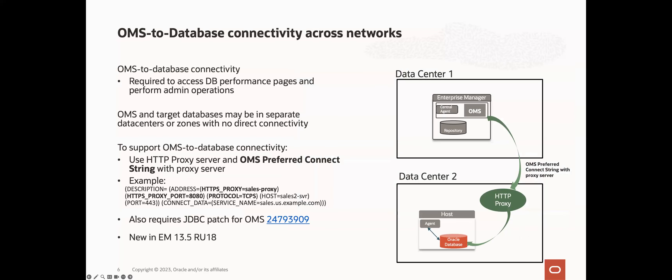OMS to database connectivity is required to access database performance pages and to perform admin operations. In some customer environments, EM and the target databases may be located in different data centers with no direct connectivity between them. So to support OMS to database connectivity, you can use the OMS preferred connect string and include a proxy server. Internally, this connection uses JDBC and JDBC supports use of a proxy server for connectivity. We show an example of what the OMS preferred connect string might look like, noting the inclusion of the proxy server and proxy port. You also need to apply the specified patch to support this configuration.